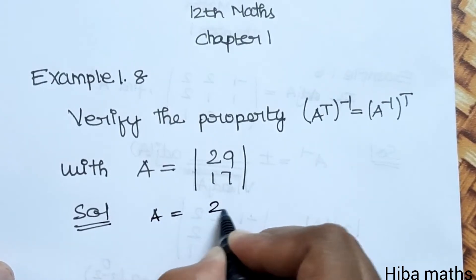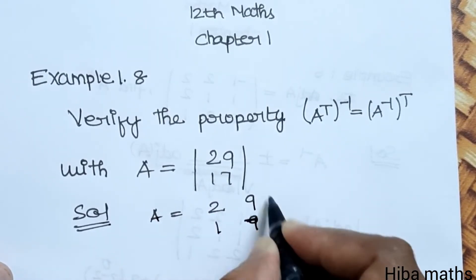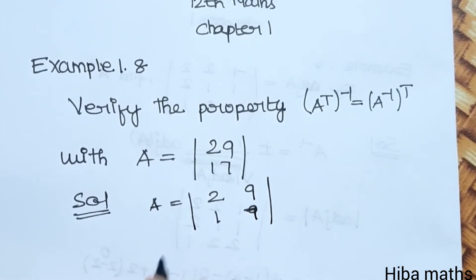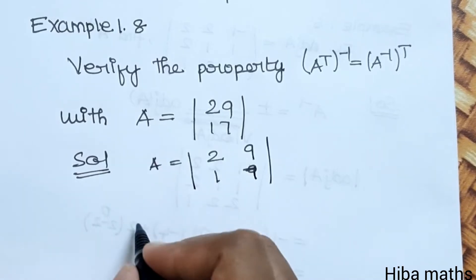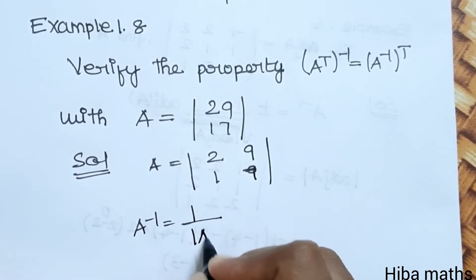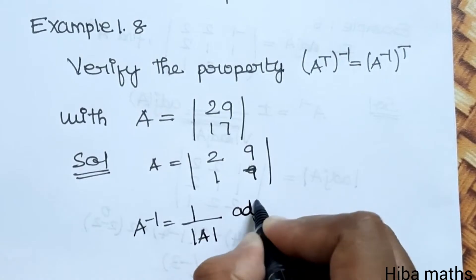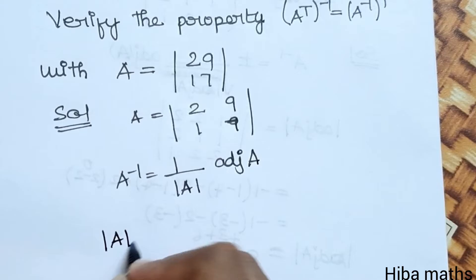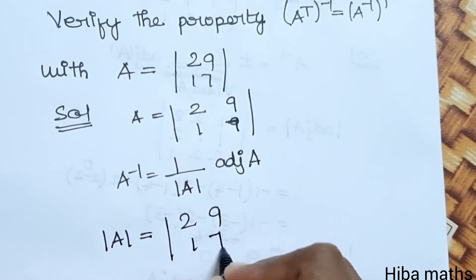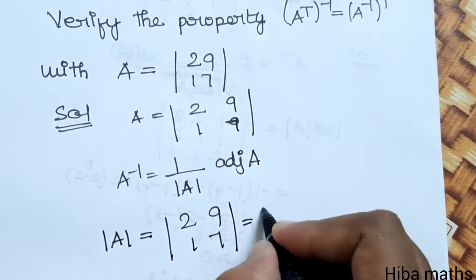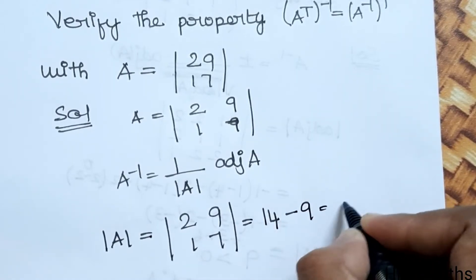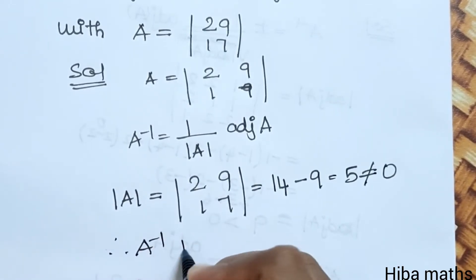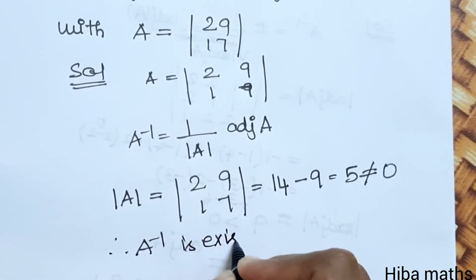Given A is equal to the matrix [2, 9; 1, 7]. Now A transpose is easy to do. A inverse is 1 by modulus of A into adjoint of A. So first, modulus of A is not equal to 0. Modulus of A is equal to 2×7 minus 9×1, so 14 minus 9 equals 5, which is not equal to 0. Therefore A inverse exists.